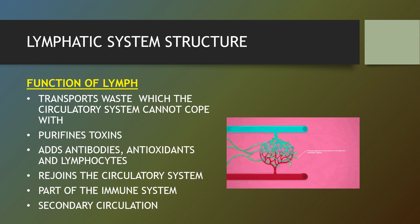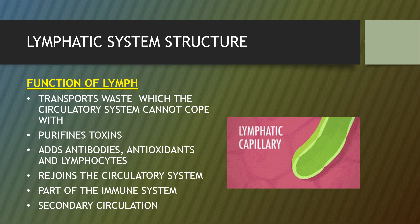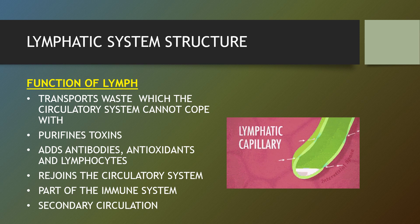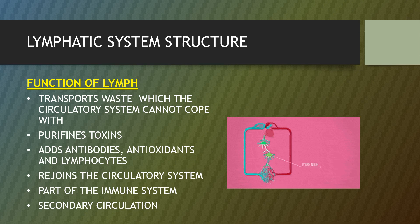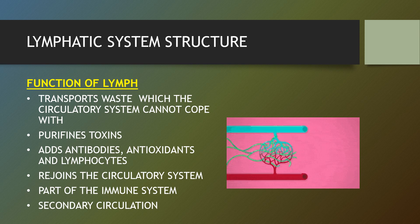Lymph nodes or lymph glands are an important part of the immune system, acting as nodes between the lymphatic vessels that span the body. Immune cells that cluster in these nodes stand ready to attack any bacteria, viruses or other foreign substances that enter the body. The lymph nodes are susceptible to diseases such as infections, cancer and trauma. They transport wastes which the circulatory system cannot cope with, purify toxins, aid antibodies, antitoxins and lymphocytes, and rejoin the circulatory system as part of the immune system.